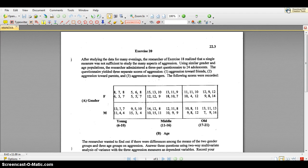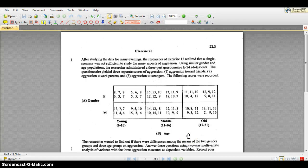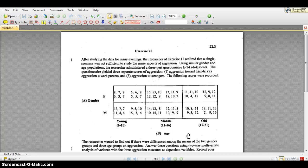So in this case, we have two independent variables. One is gender, the other one is age, and in this case we have three dependent variables: one of them is an aggression score toward friends, one is an aggression score toward parents, and the third is an aggression score toward strangers. So because we have more than one dependent variable, that's what makes this a MANOVA as opposed to a two-way ANOVA.